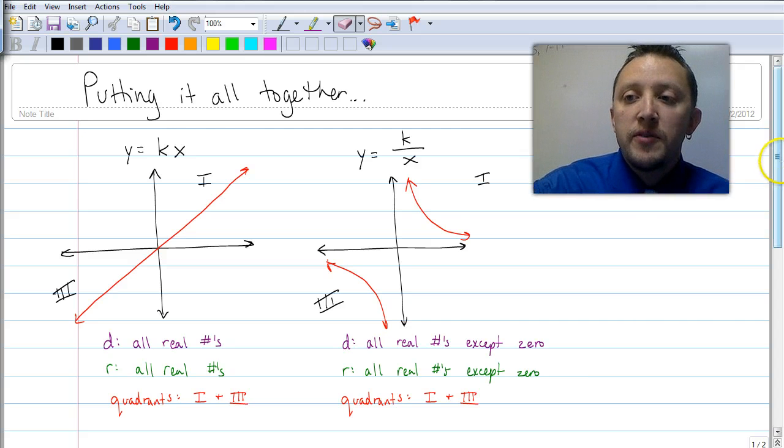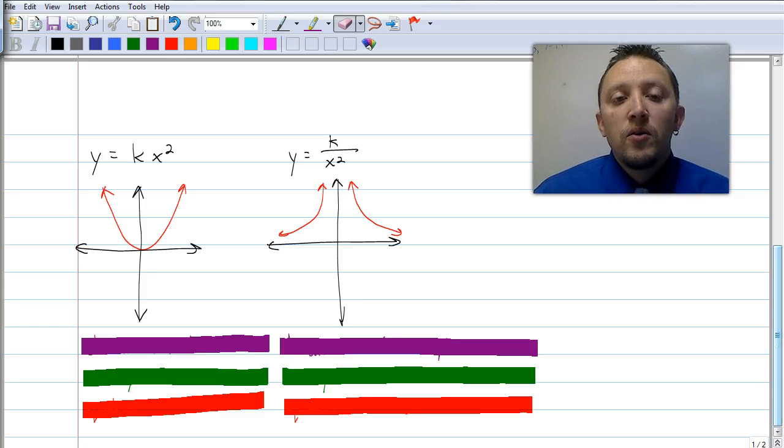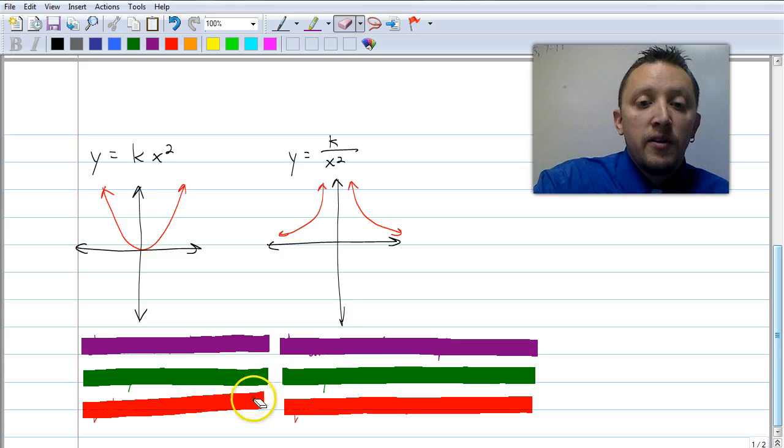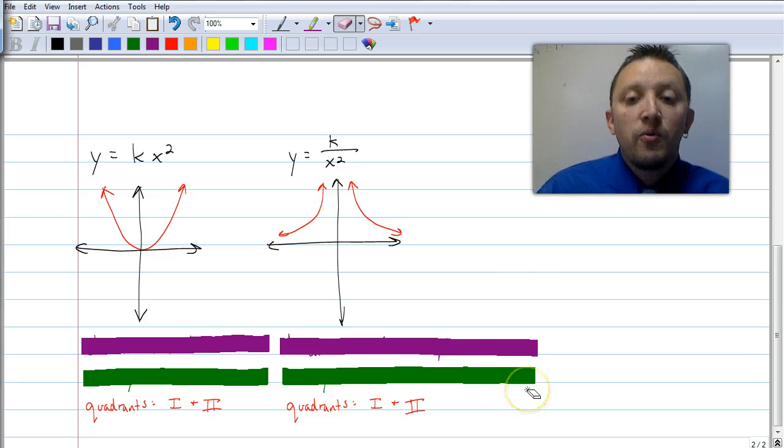Let's look at some other graphs. Let's look at these two. Remember, again, the first graph, that's in quadrants one and two. The second graph is also in quadrants one and two.